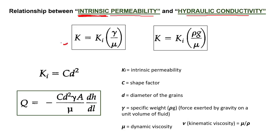The relation between intrinsic permeability and hydraulic conductivity is: K equals Ki times (rho times g) divided by mu. Here gamma — the specific weight of water — equals rho times g, and mu is the dynamic viscosity of the fluid. So hydraulic conductivity includes the property of the fluid.